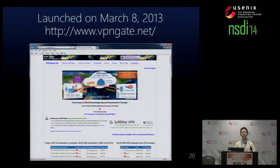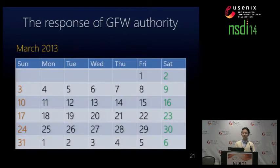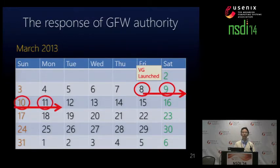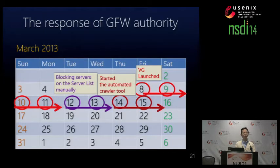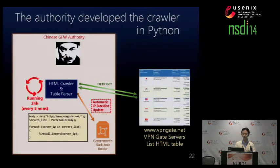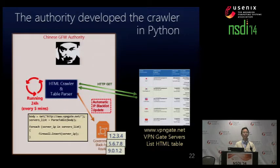We launched VPN Gate on March 8, 2013. Now we are going to show the real response of the Great Firewall authority. After we started VPN Gate, for a few days they did nothing because those days were their holidays. However, they started blocking servers on our server list manually — copying and pasting into the firewall. Two days later, they started an amazing automated crawler process. They used the API to extract all IP addresses from our server list and insert them into the firewall automatically.